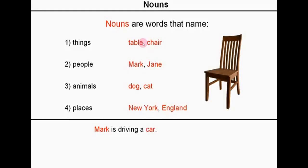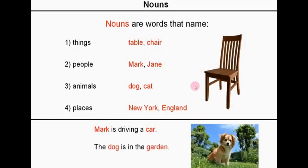Here is an example: Mark is driving a car. And in this sentence, there are two nouns — Mark and car. The dog is in the garden. So dog is a noun, garden is a noun. Another example: Let's go to London. London is a place, it is a noun.